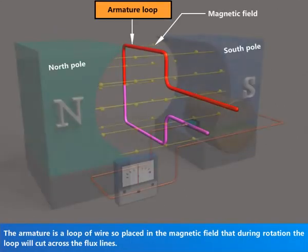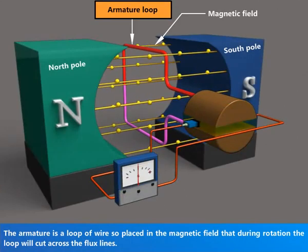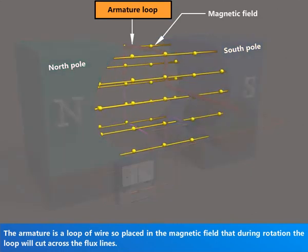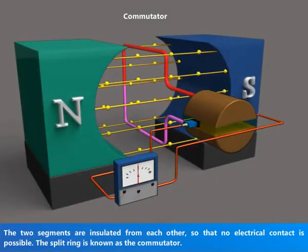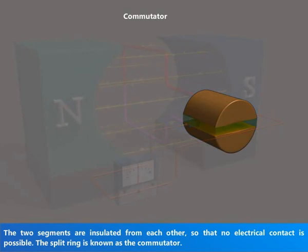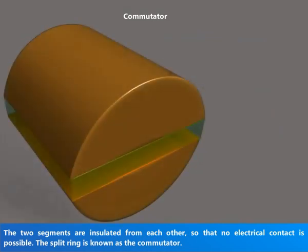The armature is a loop of wire placed in a magnetic field such that during rotation, the loop cuts across the flux lines. The two segments are insulated from each other so that no electrical contact is possible.